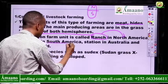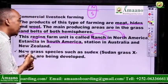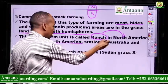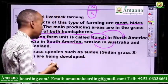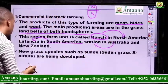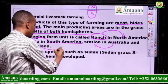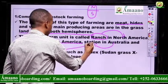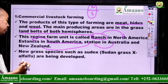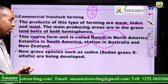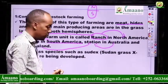In South America, they call it estancia. In Australia, they call their grassland area a station. In New Zealand, they also call it a station. New grass species such as Sudan grass and alfalfa are being developed. Those grasses are very tall — sometimes more than two meters high — and they are very good food for livestock.